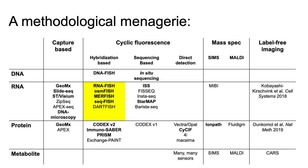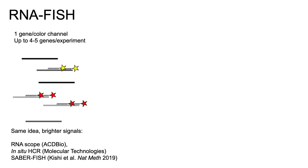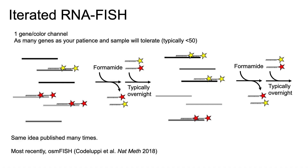Starting with hybridization-based technologies for in situ transcriptomics: RNA-FISH is the basis for all of these methods. The idea is you have a collection of different RNA molecules inside a cell, and you come in with complementary probes and detect these — one gene per color channel, so up to four or five genes per experiment. This has been done for many years. The same idea but with brighter signals is commercially available — you can buy RNA scope from ACD Bio, in situ HCR probes from Molecular Instruments, and most recently SABER-FISH from Puklin-Faucher's lab.